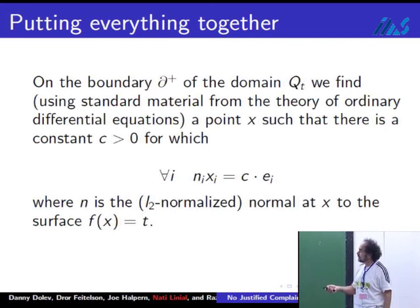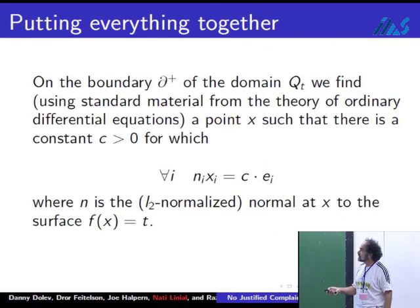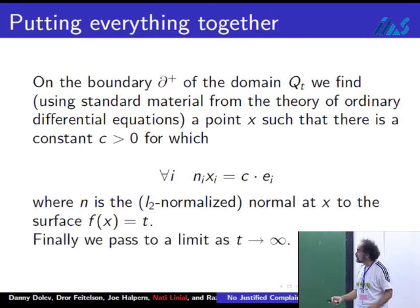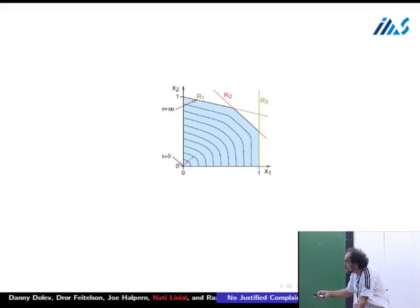On each Q_t, what I'm going to do is seek, so Q_t is defined by this, where f is this expression with the logarithms. On each such thing, I'm going to find a point where equality holds in the normal times x is proportionate to e. That I can do using standard things for differential equations, and then I want to pass to the limit as t goes to infinity. This picture shows you, first of all, the polytope P, then these different Q_t's, and now you can start seeing at the origin, it's very easy to solve this for t equals zero.